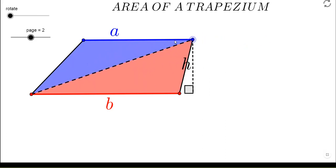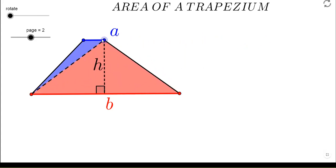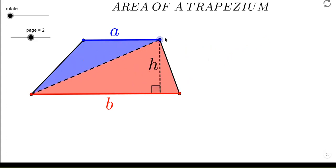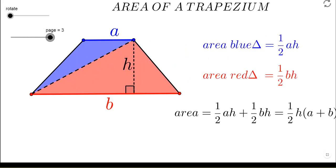So what can we do? We can take out the individual areas of these triangles and add them up. The area of the blue triangle is half base into height. The base of the blue triangle is a, so the formula is half a h. Area of the red triangle is again half base into height. The base in this case is b, so the area is half b h.